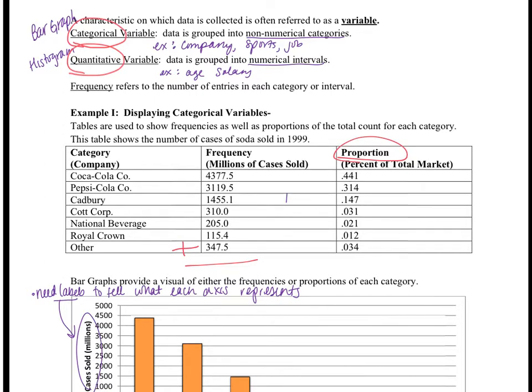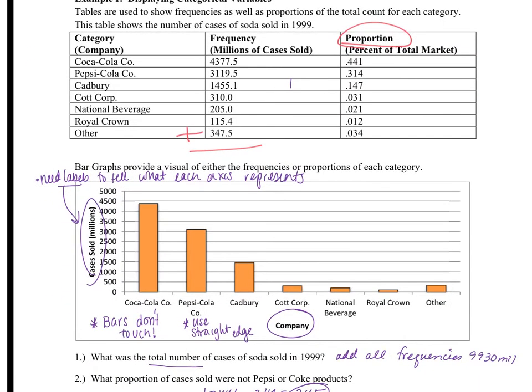Looking at the graph below, we can see what a bar graph looks like. In a bar graph, the bars do not touch. We will use a straight edge when graphing in class—I expect to see straight lines and bars that don't touch. Notice there are labels on both axes: categories along the bottom, in this case company, and numerical values on the left, cases sold in millions, with bars for each different category shown.